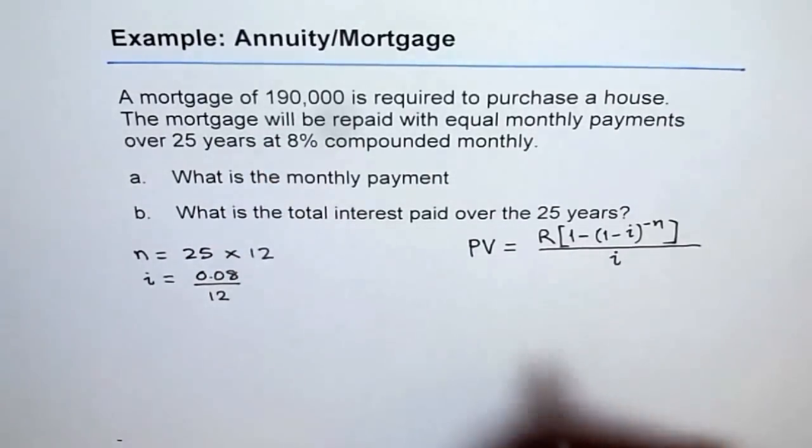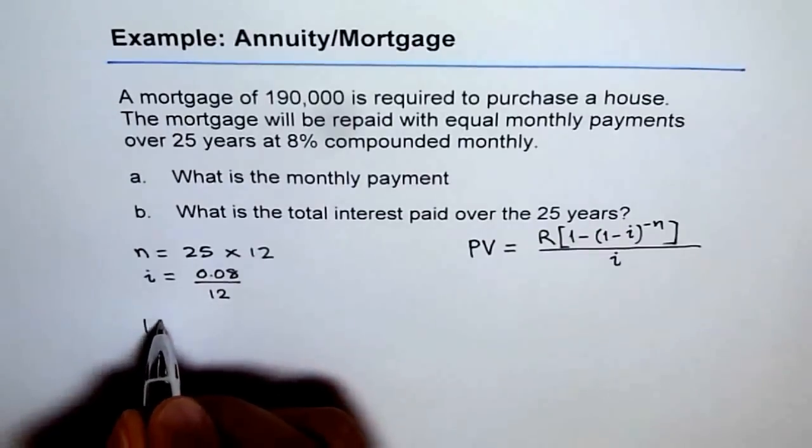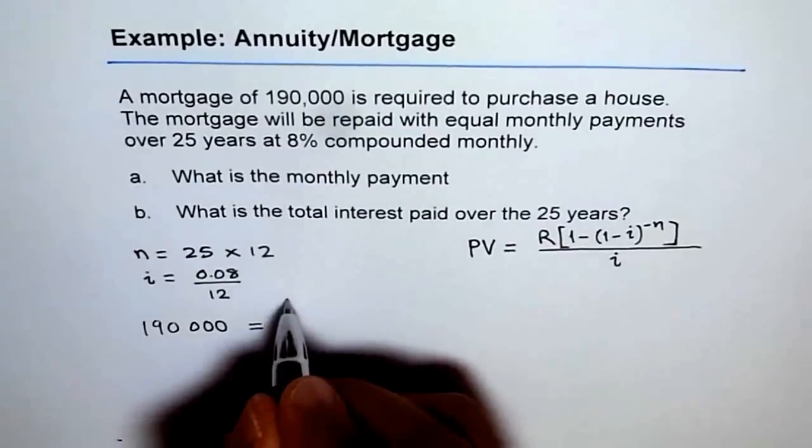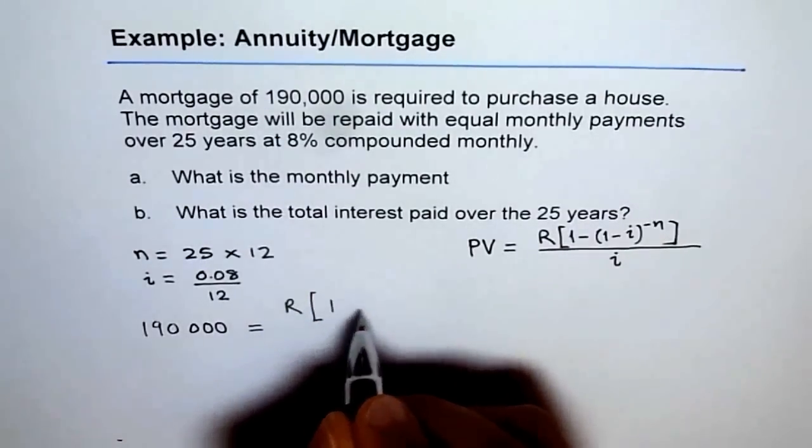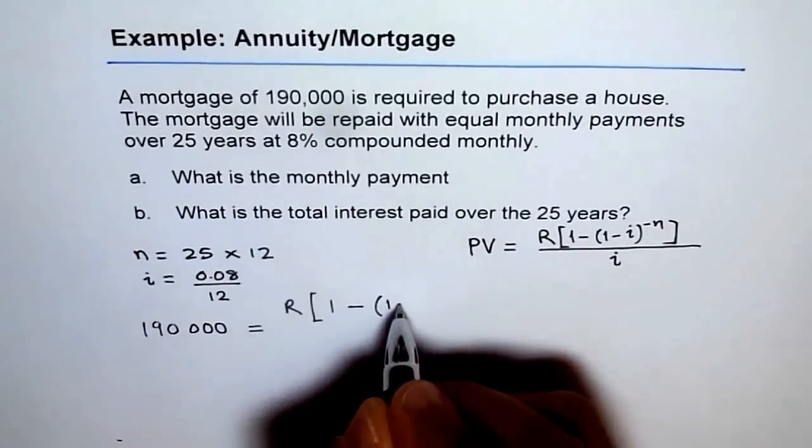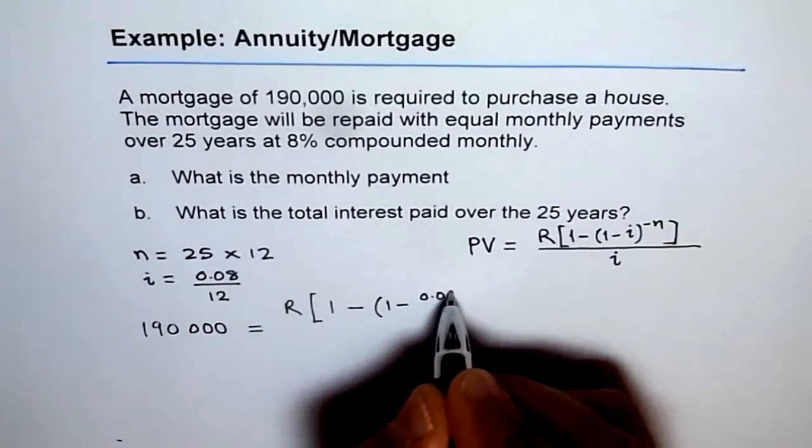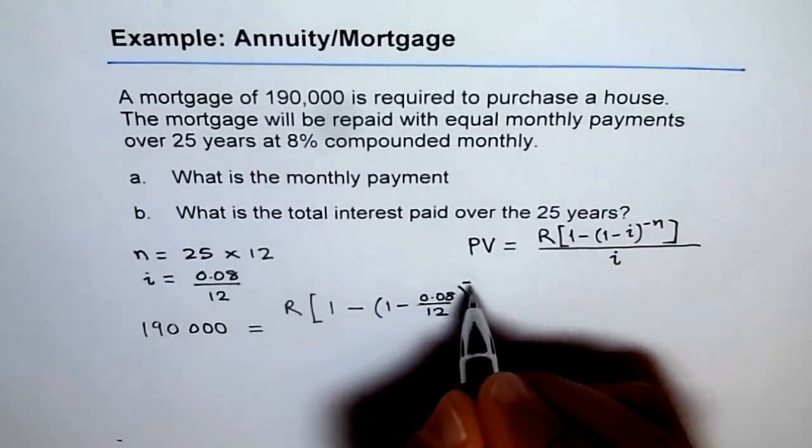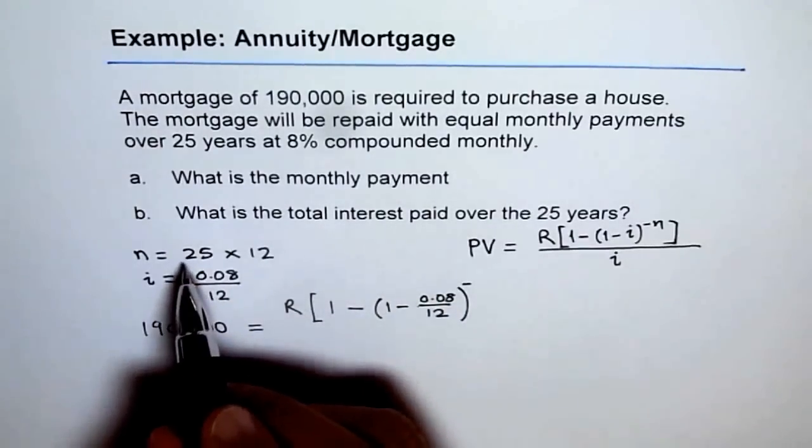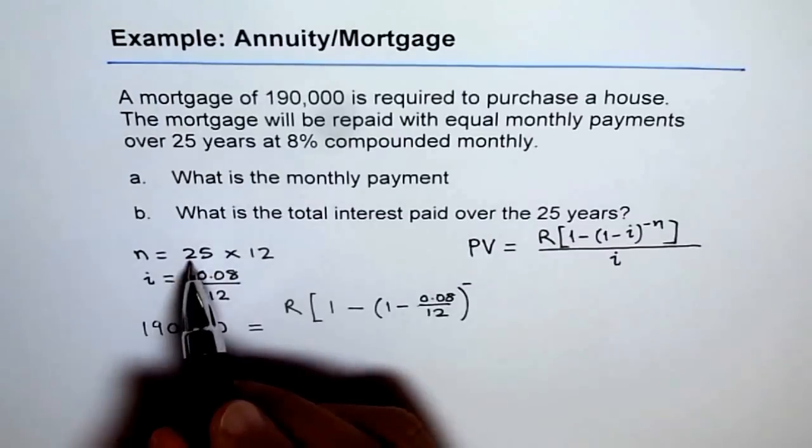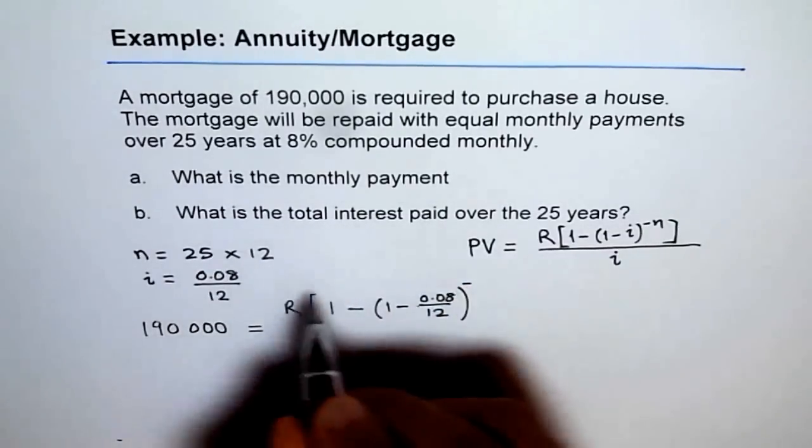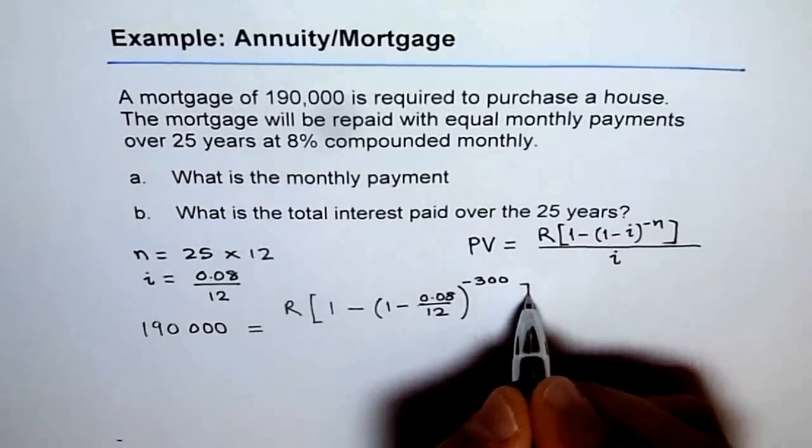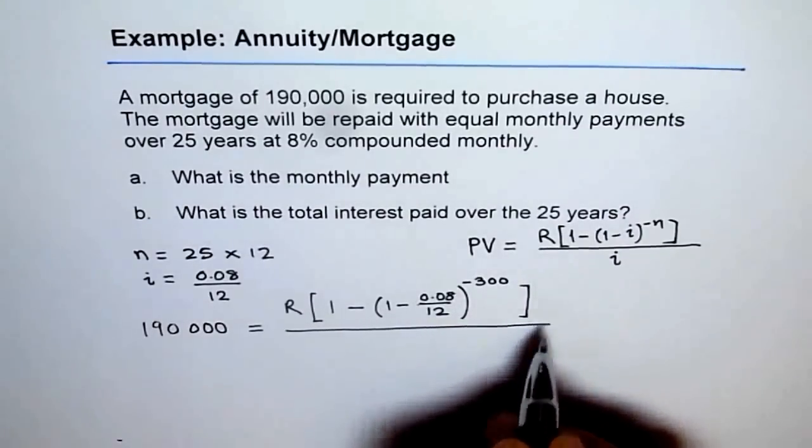If I do so, I get PV is 190,000. I am just plugging in the values, leaving things for you. So 190,000 equals R, we don't know, times 1 minus - and i is 0.08 over 12 to the power of minus - I know this is 300 because 12 times 25 is 300. So let me write 300, it becomes too complicated at times. This is simpler, following a simple step.